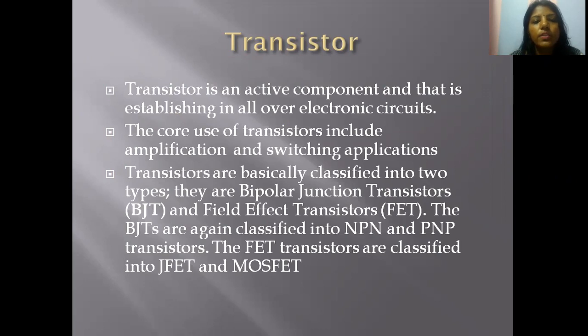Transistors are basically two types: bipolar junction transistors BJT and field effect transistors FET. BJT transistors are NPN and PNP transistors, and FET transistors are classified as junction field effect transistors JFET and metal oxide semiconductor field effect transistors MOSFET.